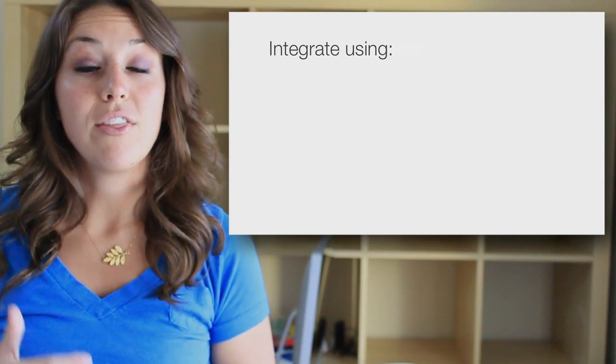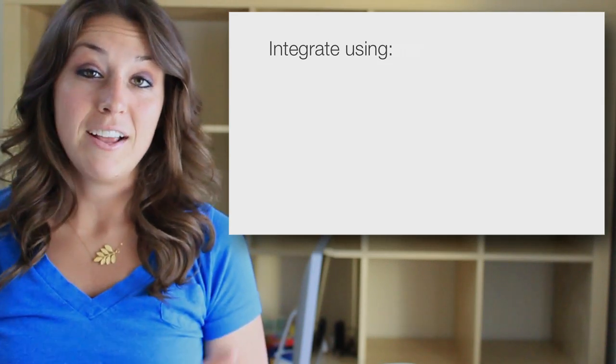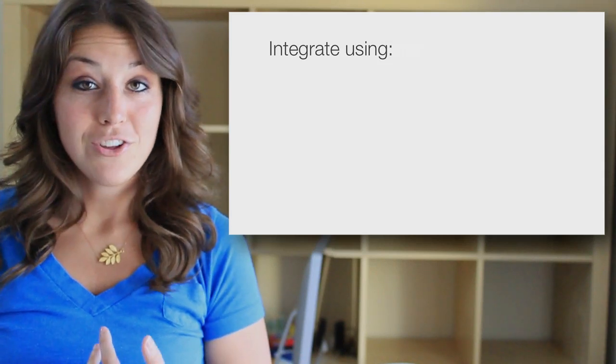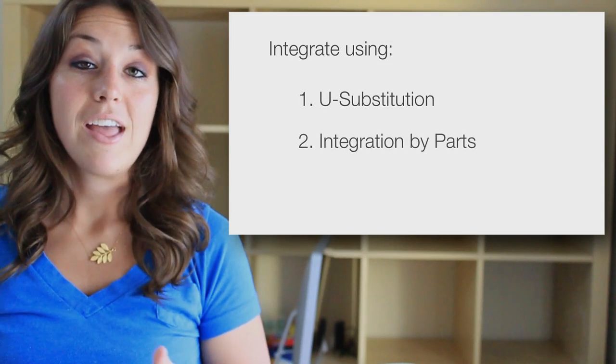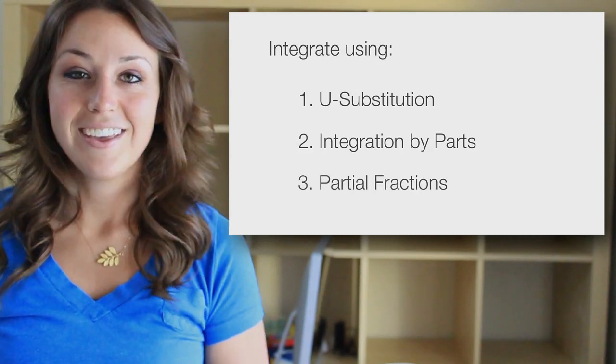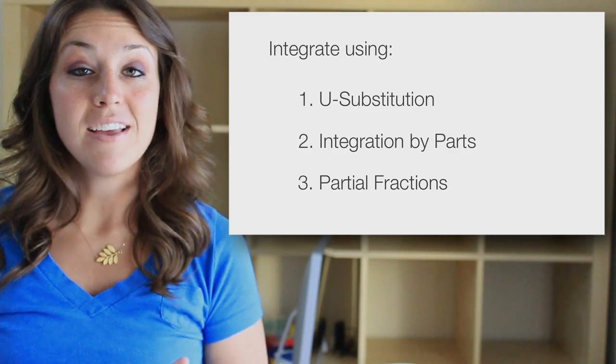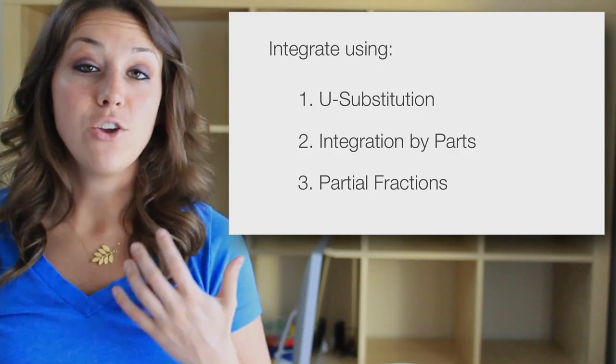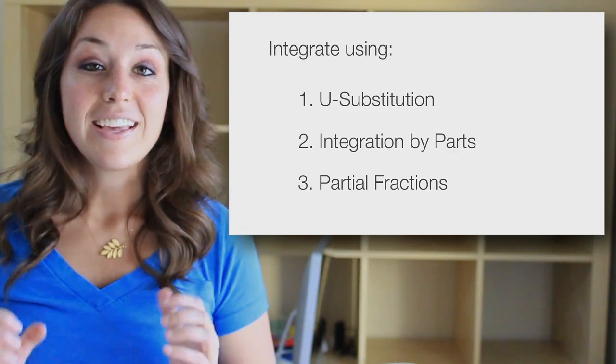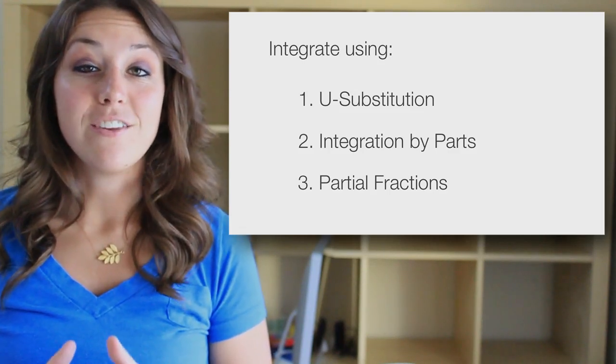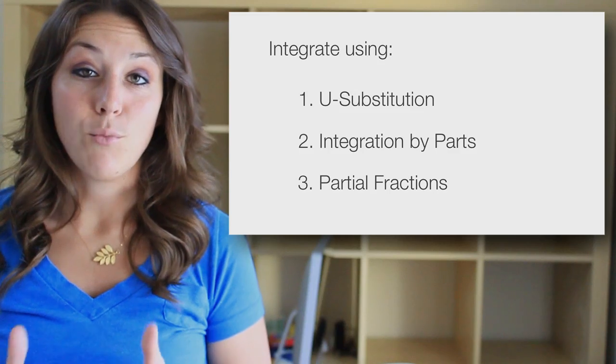In general, you should try the following methods in the following order whenever you get stuck on an integral problem. First, u-substitution, then integration by parts, then integration with partial fractions. As you become more comfortable with solving integral problems, you'll get better at identifying which method to use and you can skip straight to integration by parts or partial fractions. Keep in mind that there are other methods beyond these three for solving integrals.